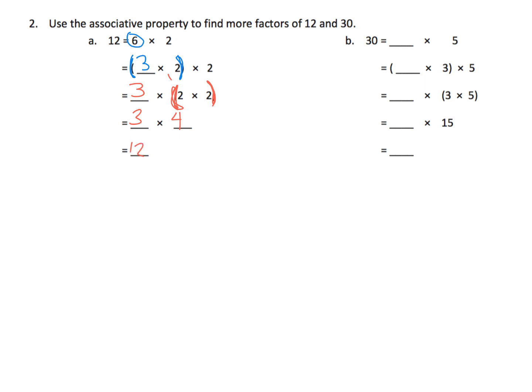And since 3 times 4 is 12, that means we did everything correctly. But the idea would be, well, what are our factors of 12? Well, we know 6 is a factor of 12. We know 2 is a factor of 12. And we now know that 3 and 4 are factors of 12, because 3 times 4 equals 12.